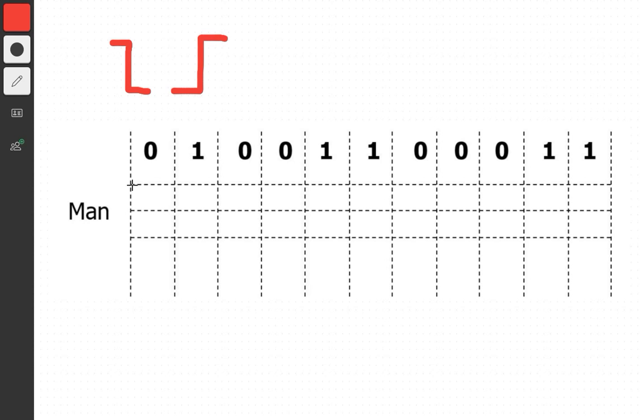We have 0, so 0 is this curve. Then we have 1, so we will go up. We have 0, so we will go down. Again we have 0, so we have to go down. We have 1, so we have to go up. 1, so go up.